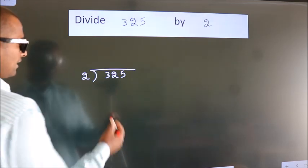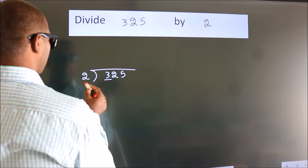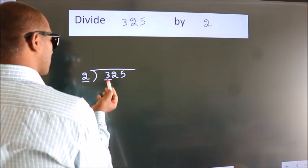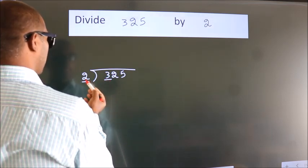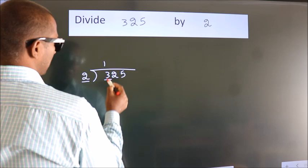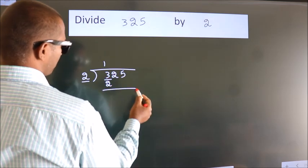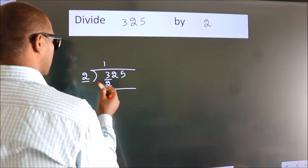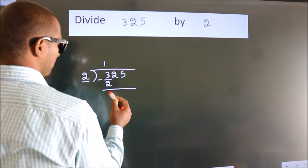Next, here we have 3, here 2. A number close to 3 in the 2 table is 2 times 1, which is 2. Now we should subtract. We get 1.